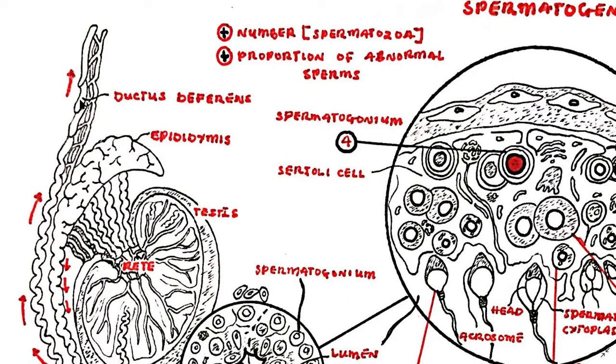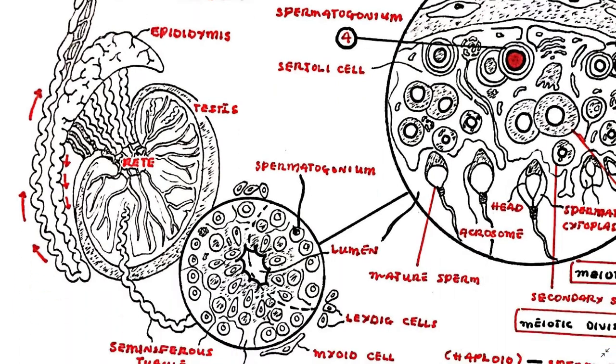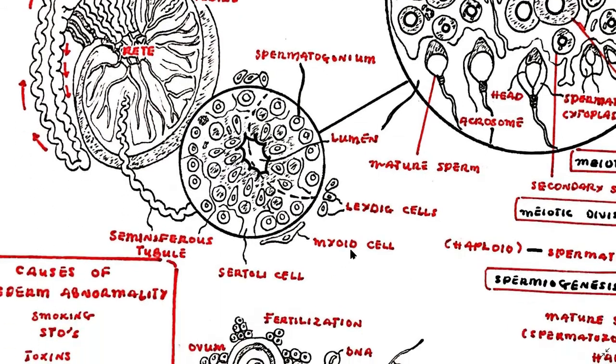The ductus deferens carries mature spermatozoa from the testes to the urethra. Spermatogonia are found in the walls of the seminiferous tubules and as they progress through spermatogenesis they pass toward the lumina of those tubules. Leydig cells within the testes produce testosterone.